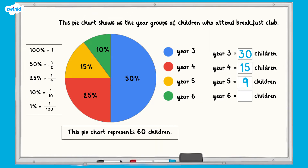Finally, the green sector represents 10%. 60 divided by 10 equals 6, so 10% represents 6 children. Six of the children were in Year 6.